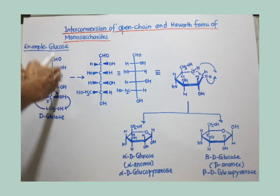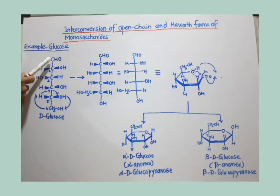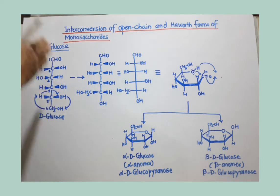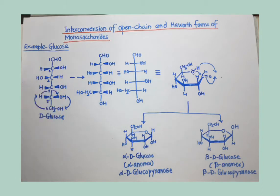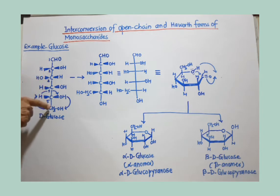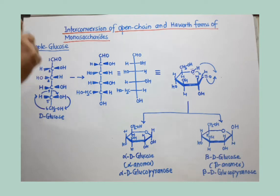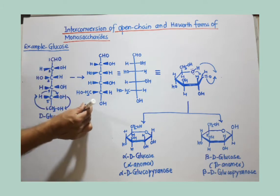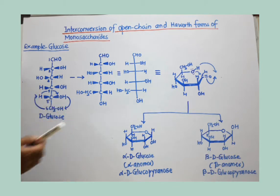Glucose is shown here in the open-chain form, where you can see the hydroxyl group and the CHO group. The hydroxyl group present at the third carbon is toward the left-hand side, and all other hydroxyl groups are toward the right-hand side. When we draw glucose in this form, try to understand the projection of hydroxyl and hydrogen. This simple line and the carbons are in one plane. The hydroxyl group shown by a broad wedge is actually projecting above this plane — suppose this board is the plane — and the hydrogen is also projecting above the plane. That is the meaning of these broad wedges.